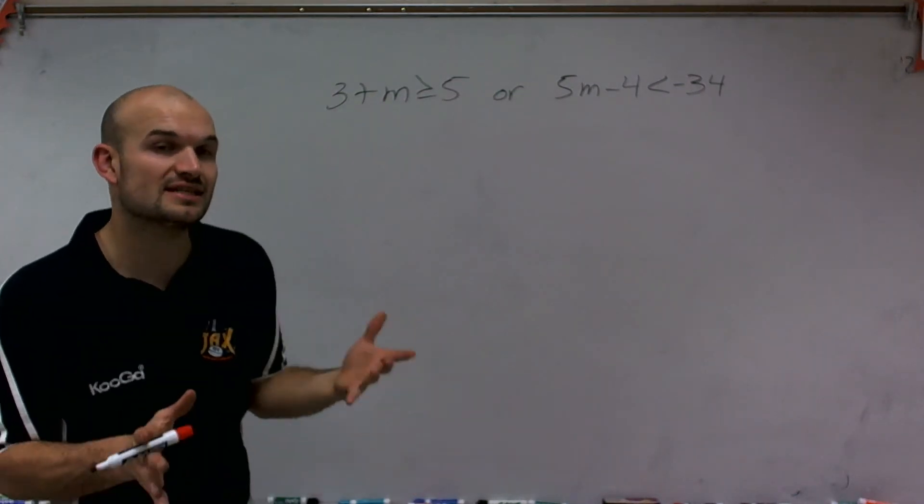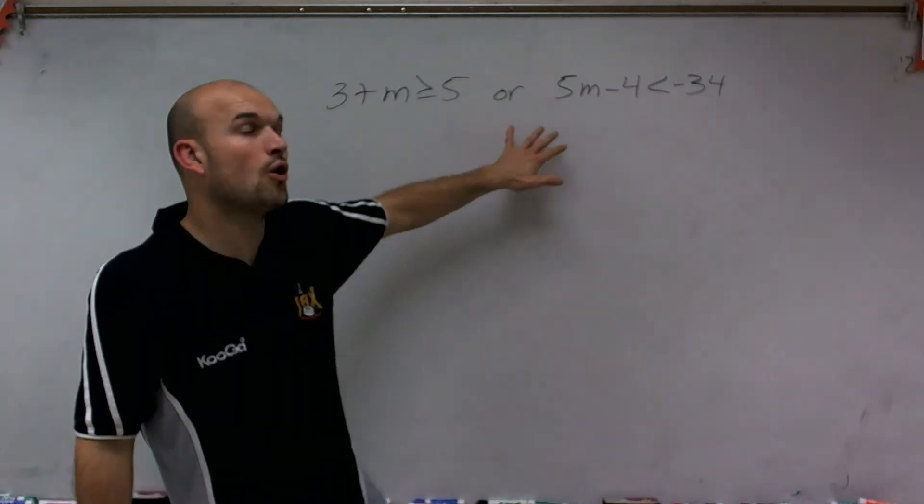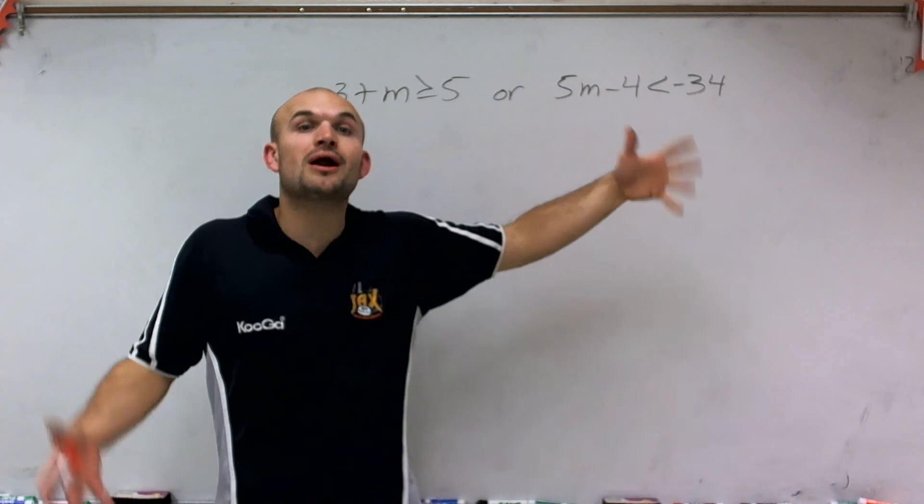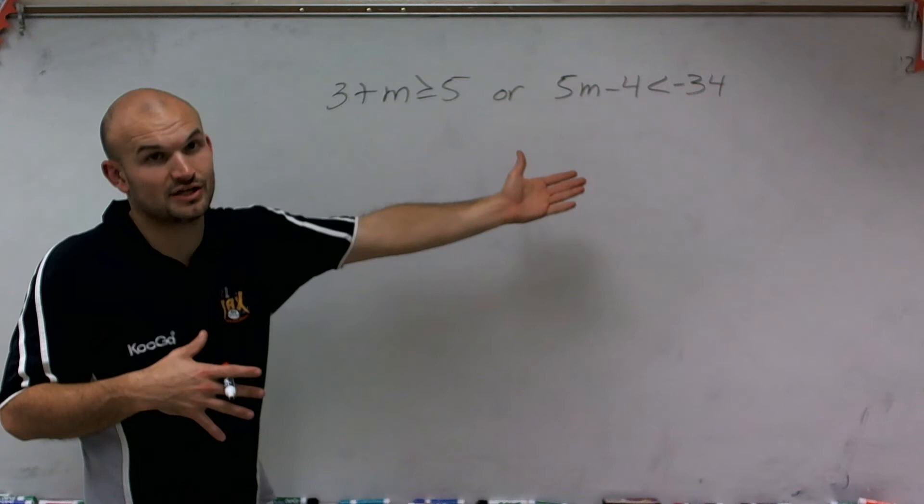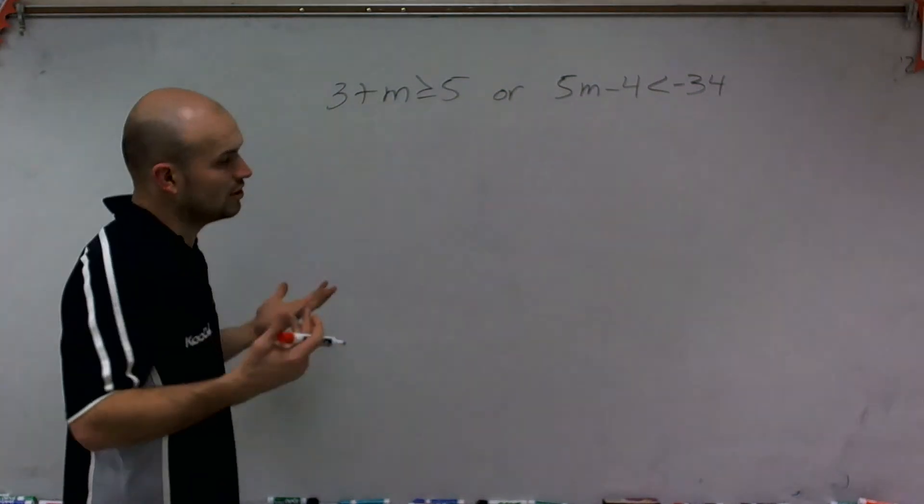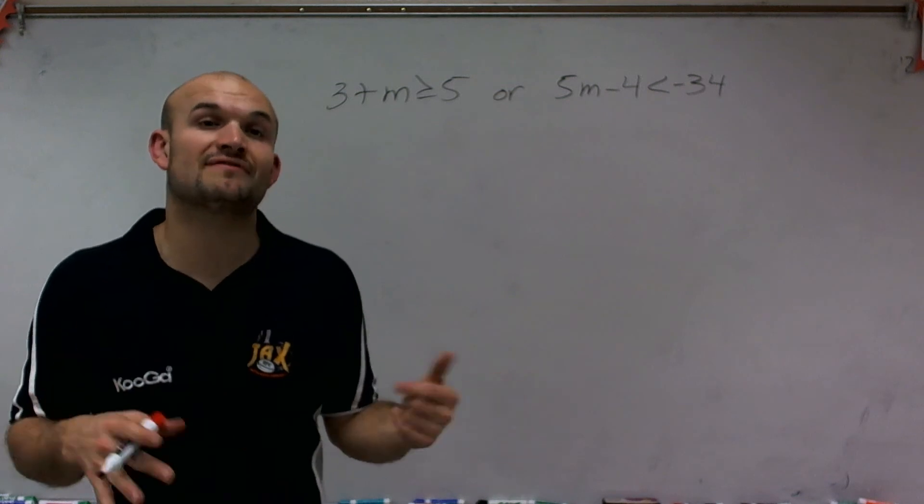So the or statement says that this inequality is true if it's true for this statement, or true for this statement, or both statements. So for any value for one inequality, the other inequality, or both of them. So to solve and graph, we're going to solve each one separately, and then we're going to graph on the same number line.